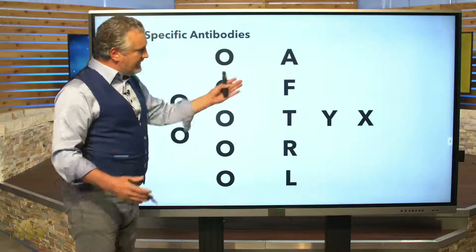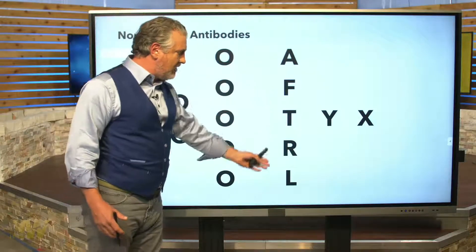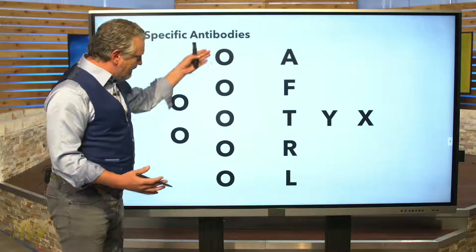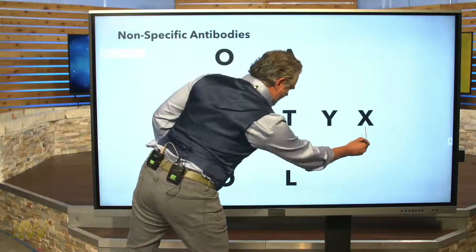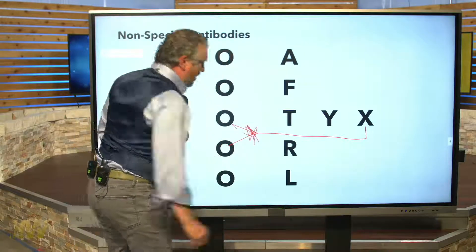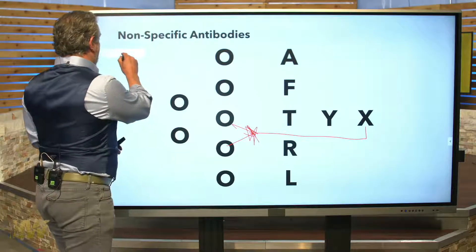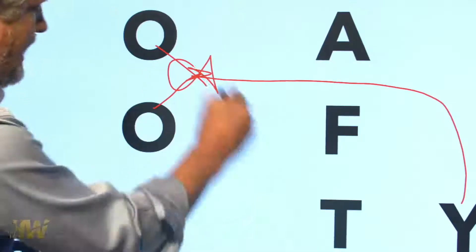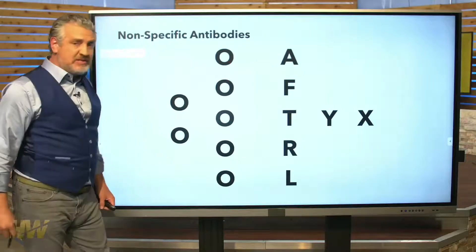Let's look at the other team. Let's say these are all variants of coronavirus: the A variant, F, T, R, L, Y, X. It doesn't matter who gets the ball in this case. When we have non-specific antibodies, anyone that comes across gets tackled. So let's say X gets the ball, the running back gets the ball, comes running over — boom — non-specific antibodies, tackled, dead, not going anywhere. Let's say it's a different play, they decide to run Y. Boom, it doesn't matter — non-specific, we see the Y too. We're going to go after anything because it's non-specific.